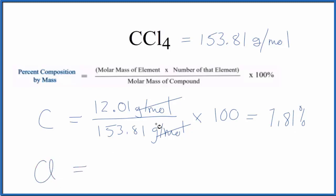The atomic mass for chlorine is 35.45 grams per mole, and we have 4 of them. We need to take this 4 into account.